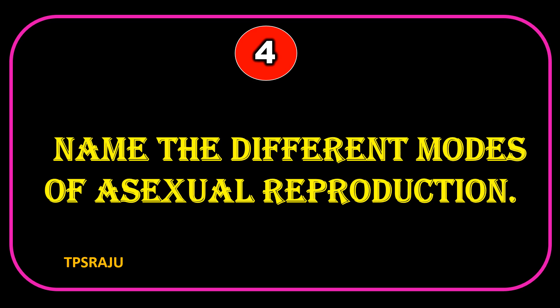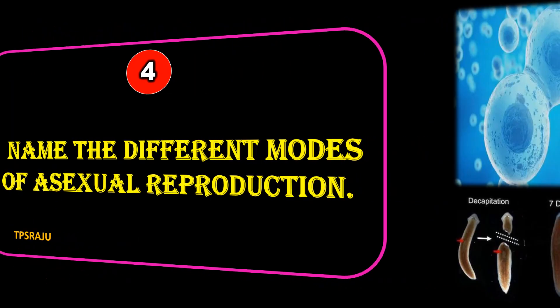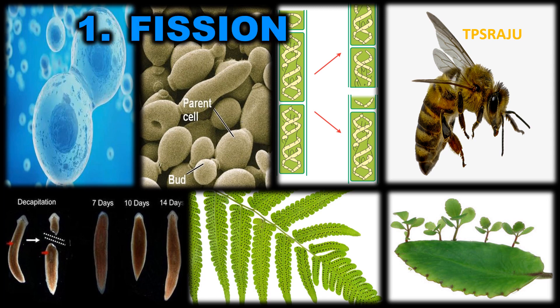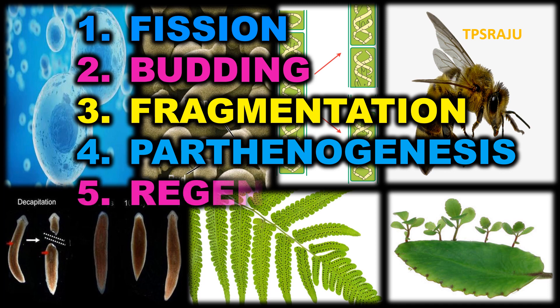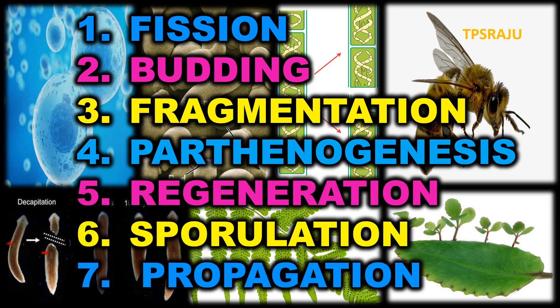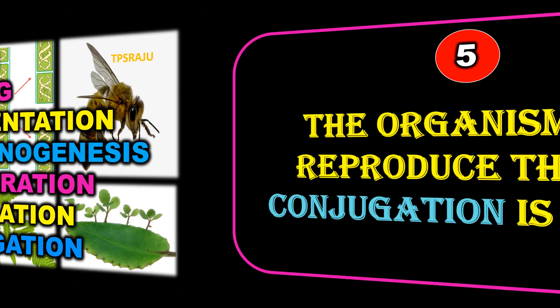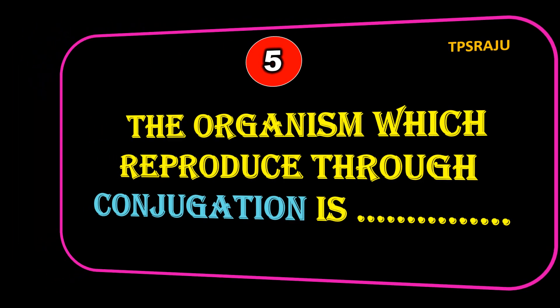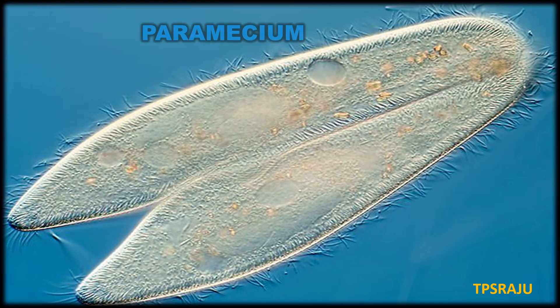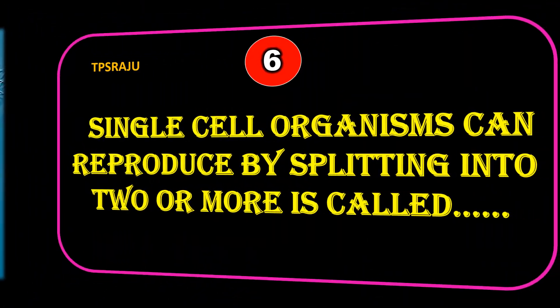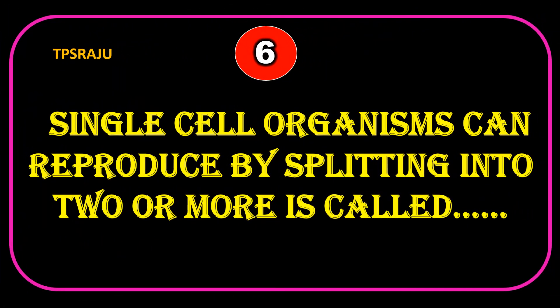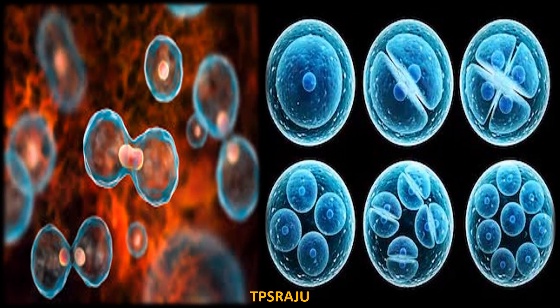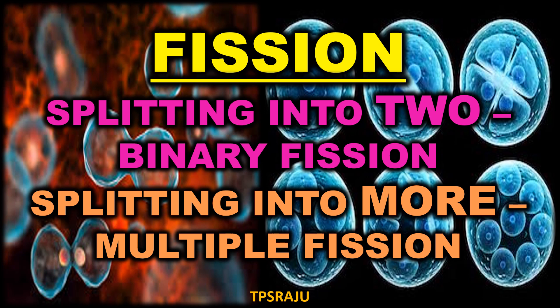Name the different modes of asexual reproduction. Fission, budding, fragmentation, parthenogenesis, regeneration, sporulation, and propagation. The organism which reproduces through conjugation is Paramecium. Single-cell organisms can reproduce by splitting into two or more — this is called fission. Splitting into two is binary fission; splitting into more is multiple fission.